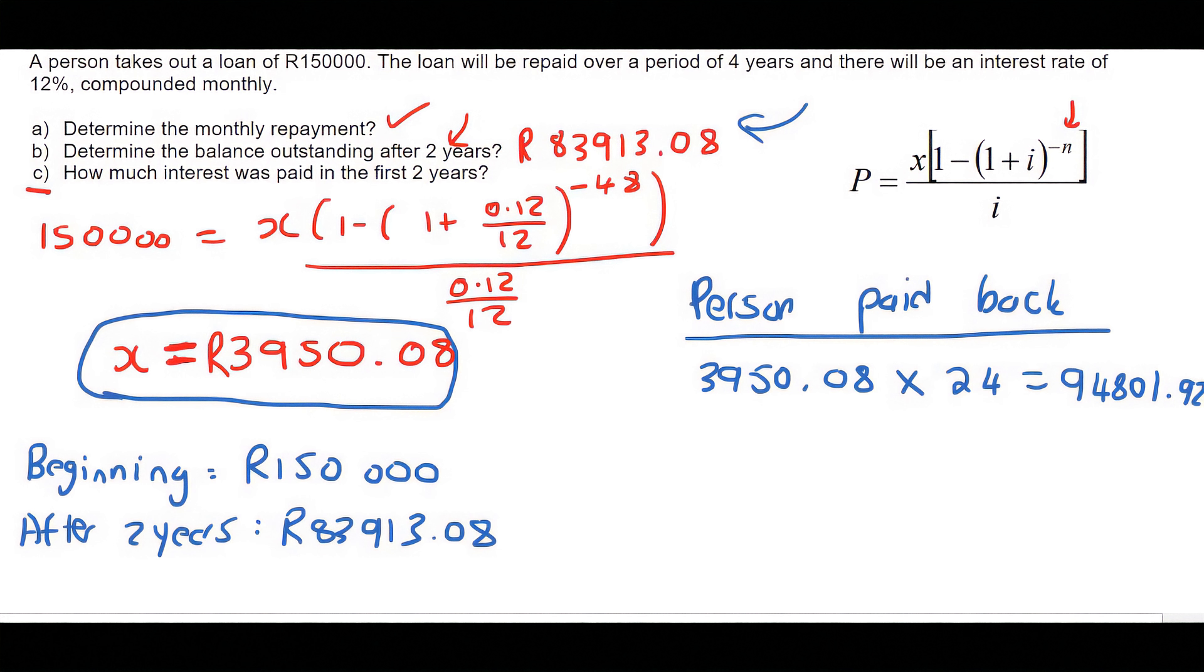And then we'd simply say 150,000 minus what it's currently worth. And that's going to tell us that the loan has gone down by 83,000. Oh, no.